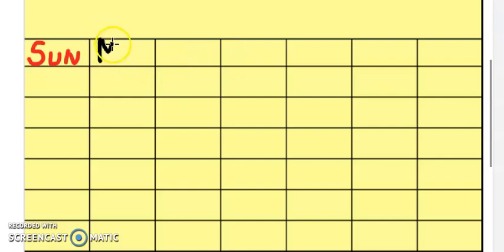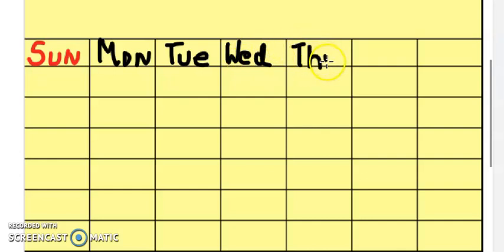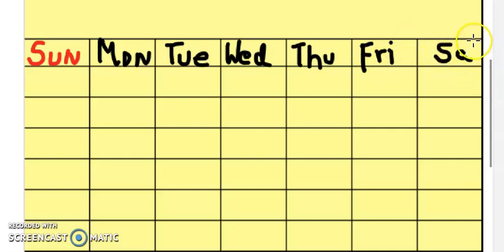So write MON, then TUE. I am not writing the rest — you will write it: WED, THU, FRI, SAT. I have written everything now.